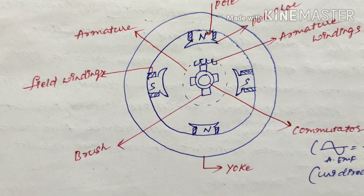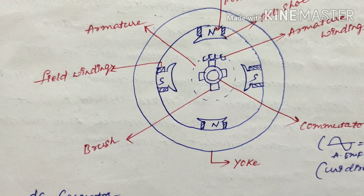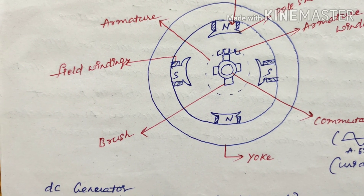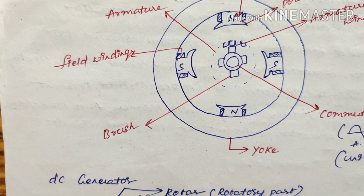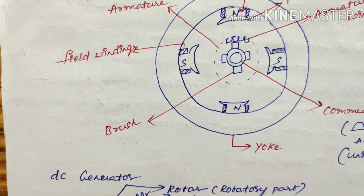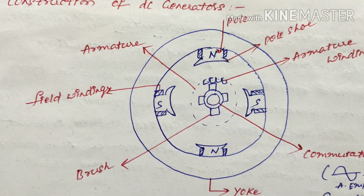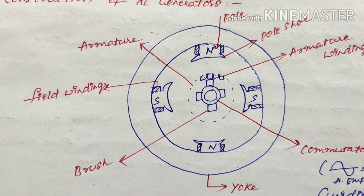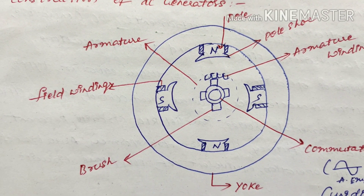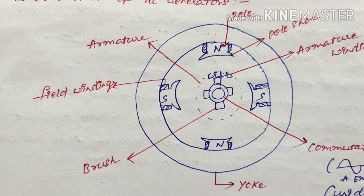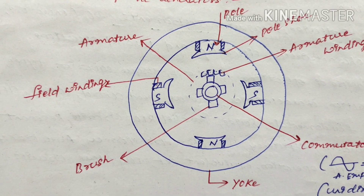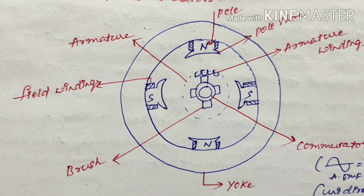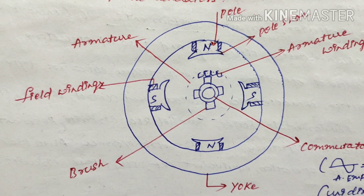The pole is divided into two parts: pole core and pole shoe. Pole core is made up of cast iron or cast steel. Pole shoes are laminated to reduce losses such as iron losses, copper losses, mechanical losses, frictional losses, and stray load losses. Pole shoes are used for spreading out flux in the air gap due to their larger cross section, and they also support the field windings.